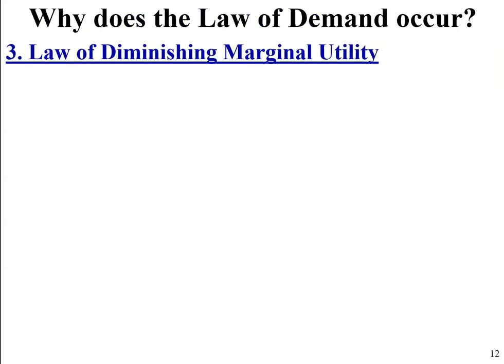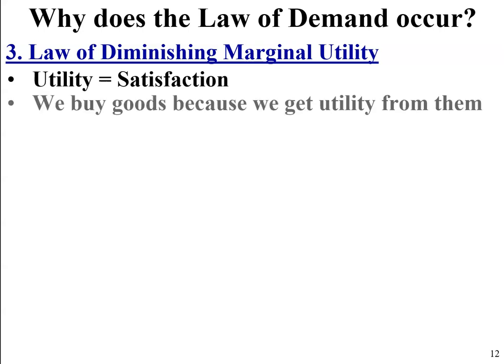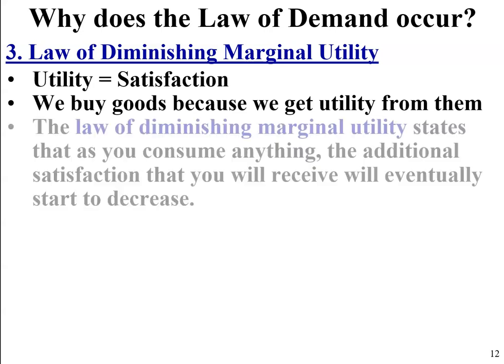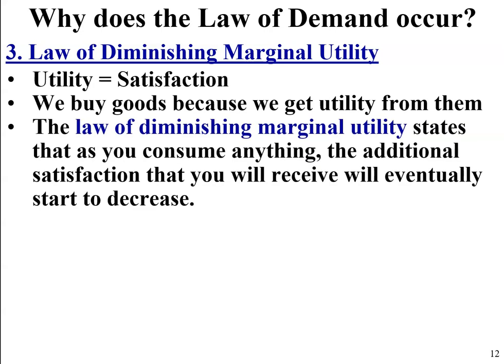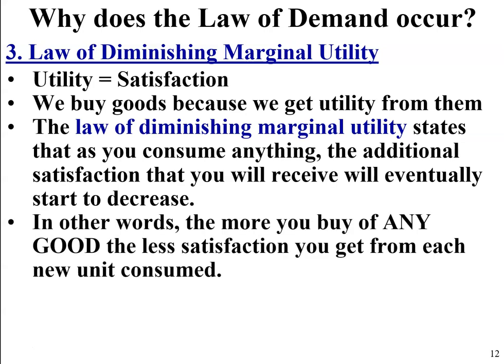The law of diminishing marginal utility. As a reminder from Unit 1, utility means satisfaction. We buy goods because we get utility from them. The law of diminishing marginal utility states that as you consume anything, the additional satisfaction you receive will eventually start to decrease. In other words, the more you buy of any good, the less satisfaction you get from each of the new units consumed.